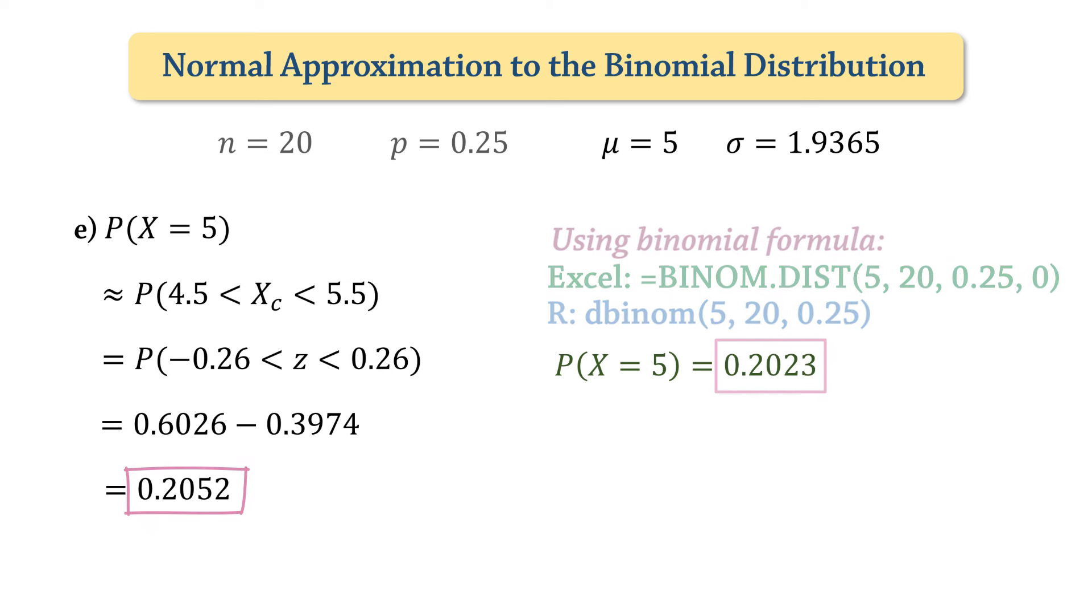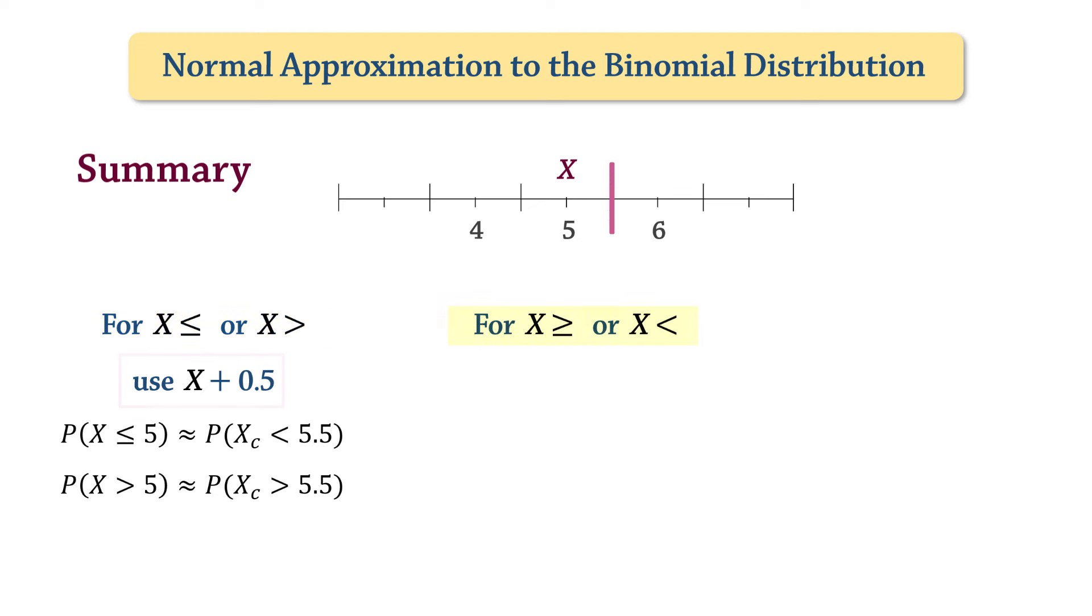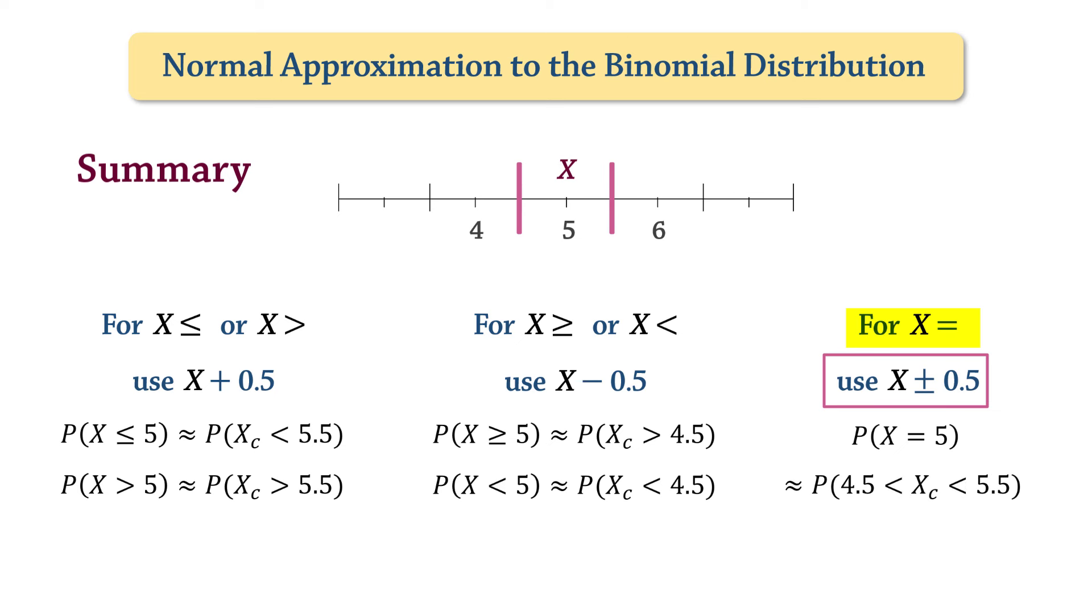In summary, to determine how to apply continuity correction, you may want to draw a short sketch of the x value you're solving for on a line or histogram, along with the integer before and after it. Then, you can visually determine whether to add or subtract 0.5 from x. Otherwise, you can use these rules. For x less than or equal to or x greater than, add 0.5 to x. For x greater or equal to or x less than, subtract 0.5 from x. And for x equals, subtract and add 0.5 to x. And that's a quick overview of normal approximation to the binomial distribution. Thanks for watching.